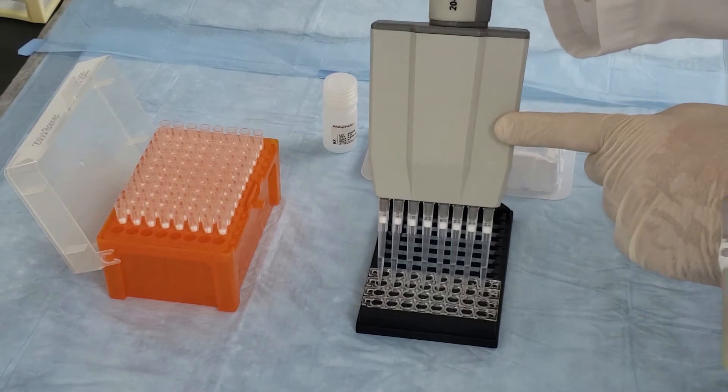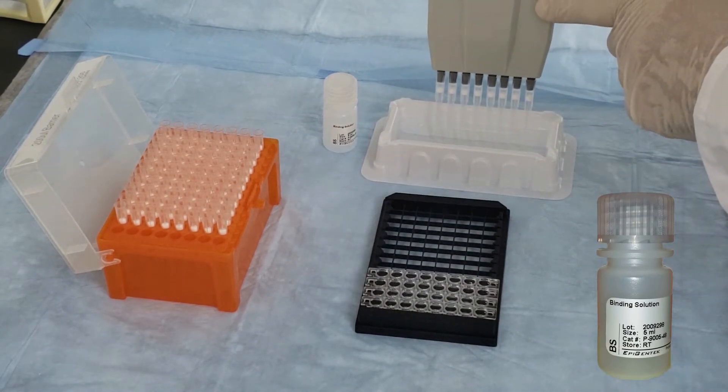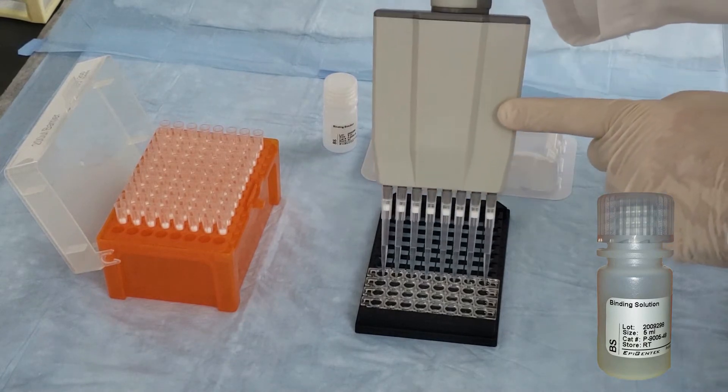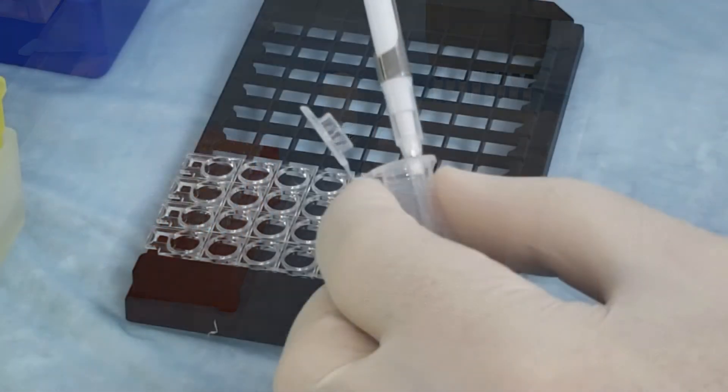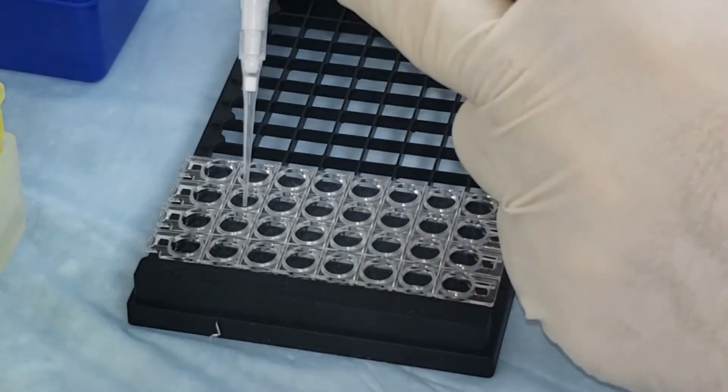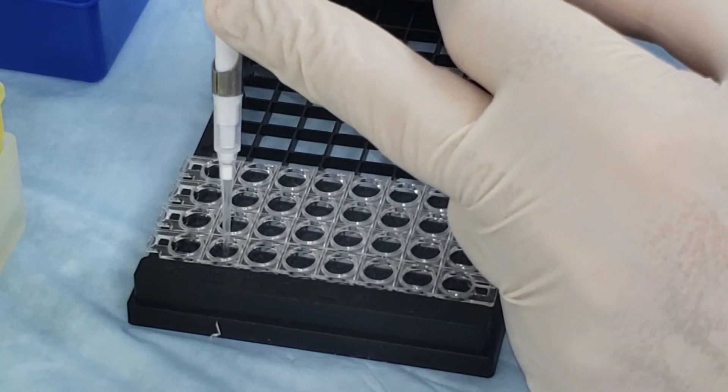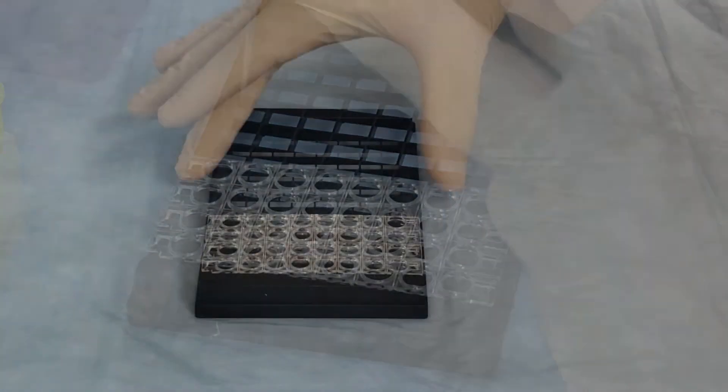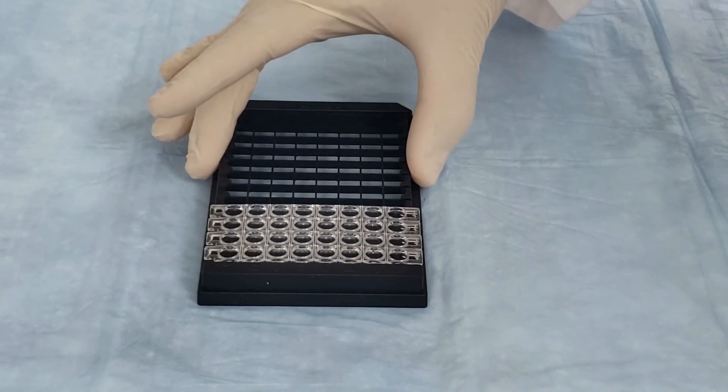To begin this next set of steps, add binding solution to each well. Then add the negative and positive control standards, and finally RNA samples into the designated wells. Aspirate 1-2 times to ensure complete addition. Mix the solution by gently shaking the plate several times on a flat surface.